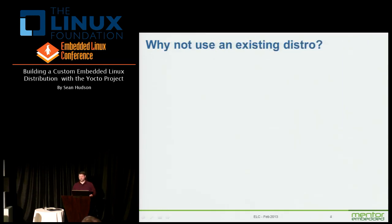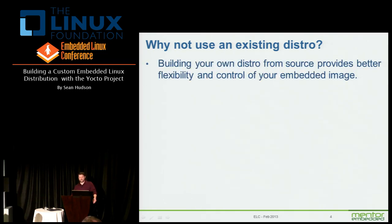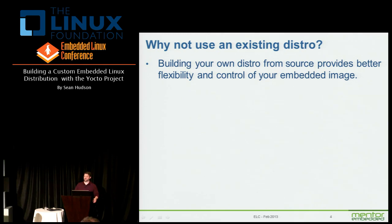I get this question fairly frequently: why not just use an existing distribution? You can use Debian or Fedora — these are certainly valid choices, but you're losing a lot in terms of flexibility. You're very dependent on what's going on upstream, dependent on the release cadence and developers outside of your control. Building from source gives you a lot more flexibility and control of your embedded image. Reference distributions inside the Yocto Project include Angstrom and Poky.